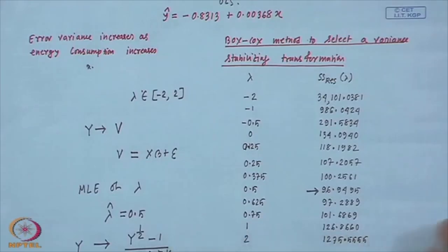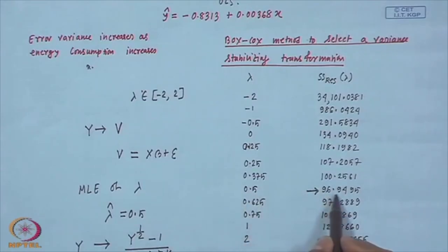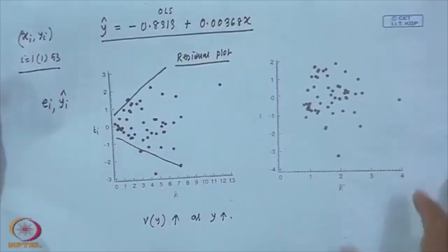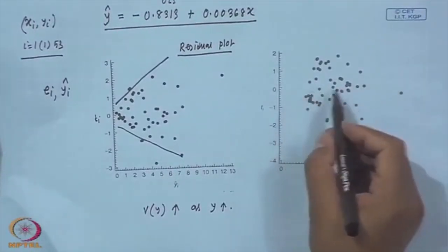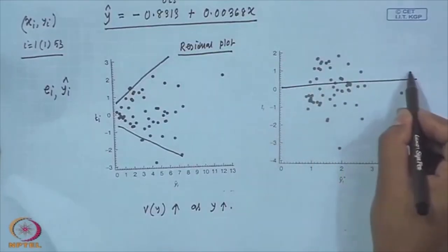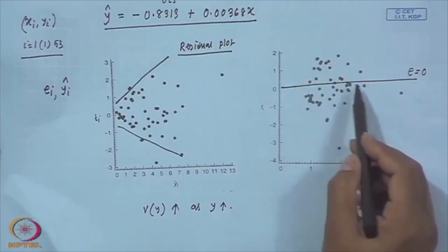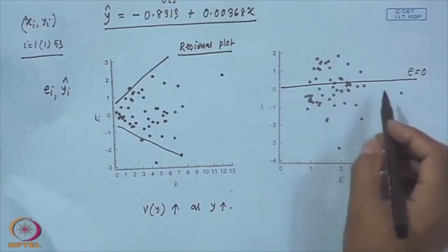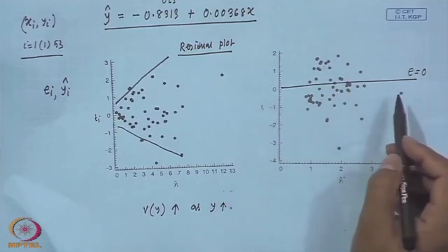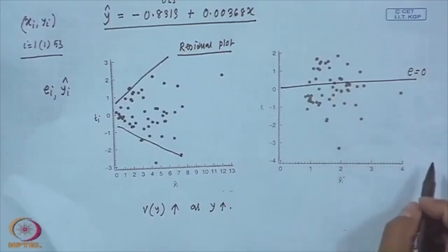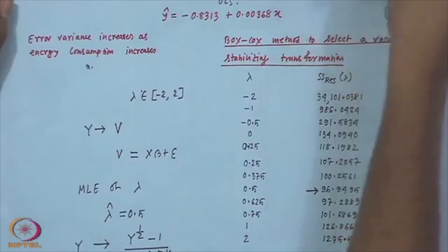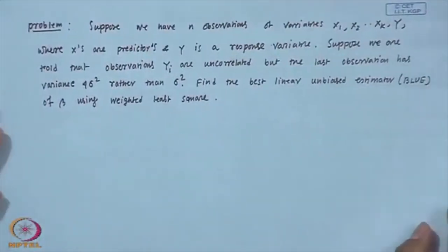Checking the residual plot for the transformed data with λ = 0.5, the standardized residuals are almost centered about the line e = 0, showing that the transformed fit has improved. This is the Box-Cox method.